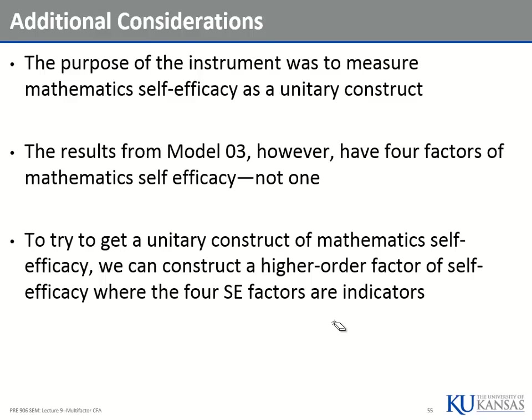So we've got model fit. We found four dimensions of self-efficacy: understanding, information, problem solving, and one more. We were trying to measure one overall dimension. What we can do is build a higher order factor model. Perhaps these four factors are actually measuring one overall dimension of self-efficacy — not the items, but the four factors might be measured by a self-efficacy factor on top. A higher order factor is what we call this.